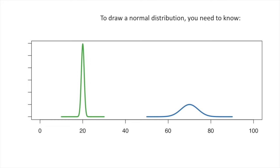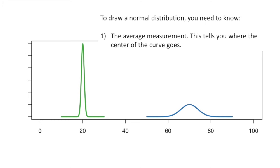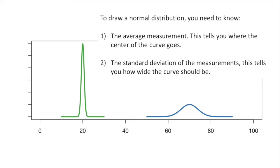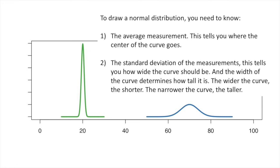To draw a normal distribution, you need to know: 1. The average measurement. This tells you where the center of the curve goes. 2. The standard deviation of the measurements. This tells you how wide the curve should be. And the width of the curve determines how tall it is. The wider the curve, the shorter. The narrower the curve, the taller.